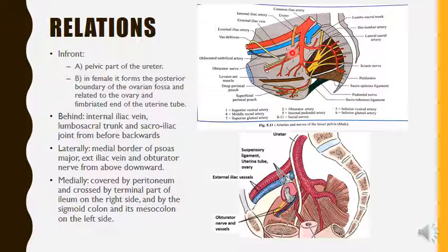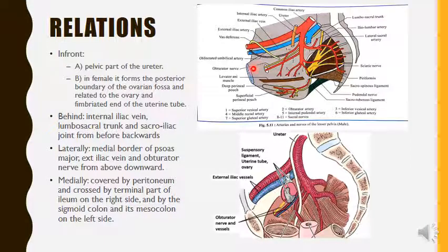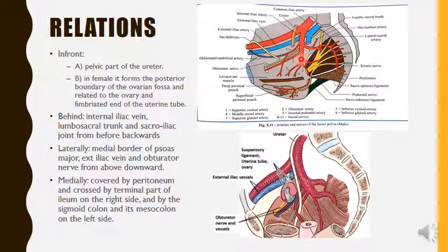Laterally, the internal iliac artery is related to the medial border of psoas major, the external iliac vein, and the obturator nerve. Medially, it is covered by peritoneum and crossed by the terminal part of the ileum on the right side, and by the sigmoid colon and its mesocolon on the left side.